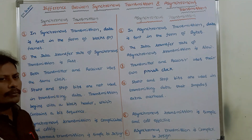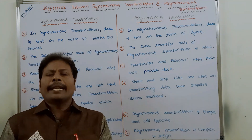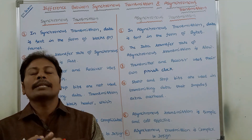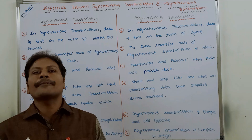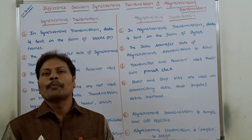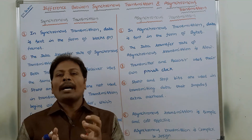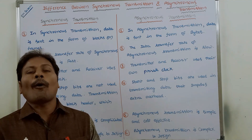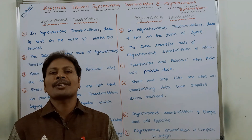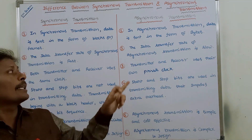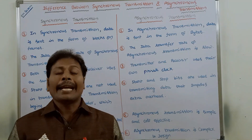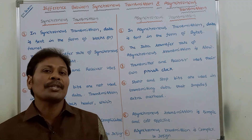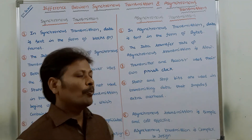The second point is data transfer rate — the amount of data transferred in one second. The data transfer rate of synchronous transmission is very fast, whereas in the case of asynchronous transmission, the data transfer rate is slow.